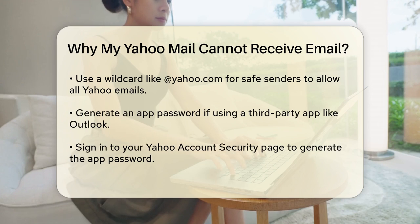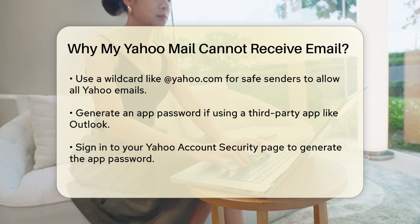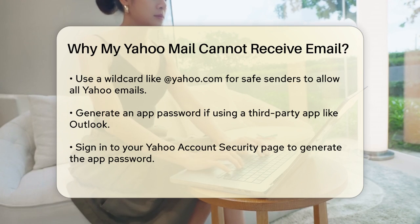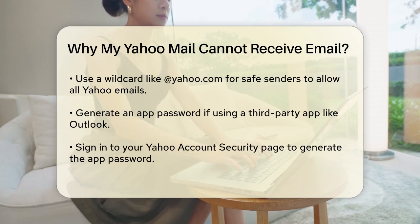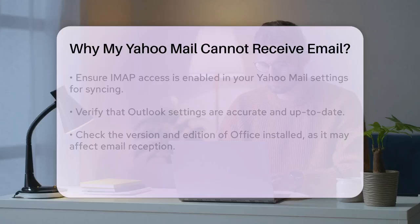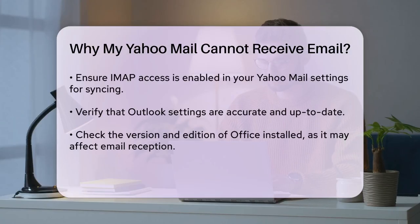Sometimes the problem lies in the settings of your email client. If you're using Outlook or another third-party app to access your Yahoo Mail, you might need to generate an app password. Here's what you do: Sign in to your Yahoo account security page, click on Generate App Password or Manage App Passwords, select your app from the drop-down menu, and click Generate. This app password allows non-Yahoo apps to securely access your Yahoo account.